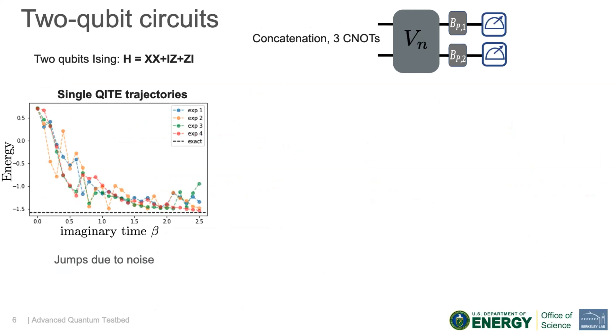So then we wanted to do that for two qubits. We concatenate the gates, and we can concatenate them in only three CNOT gates using the KAK algorithm. We get this kind of single QITE trajectories where we see some jumps happening. This is because our system is noisy, and when we solve the linear system we actually see this noise happening.